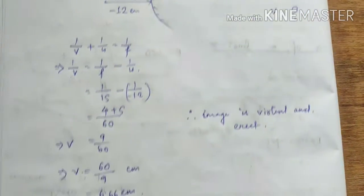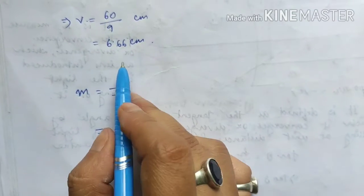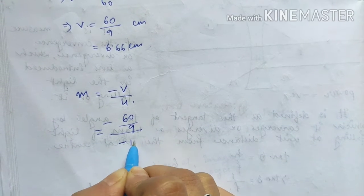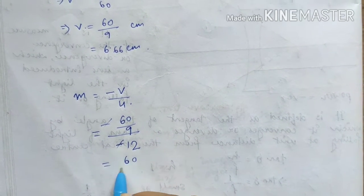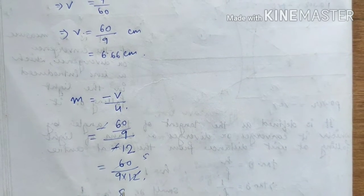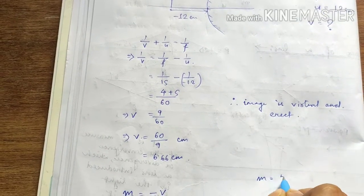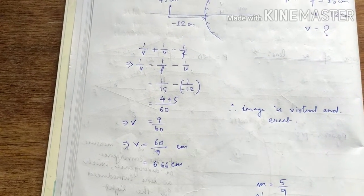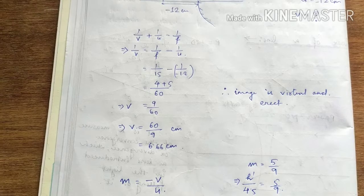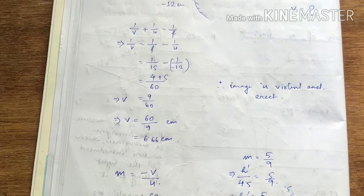Magnification M equals minus V by U. Using V = 60/9, we get M = 5 by 9. The image size equals magnification into object size: 5/9 into 4.5 equals 2.5 cm. The image height is 2.5 cm.